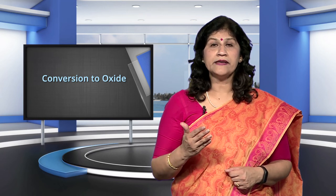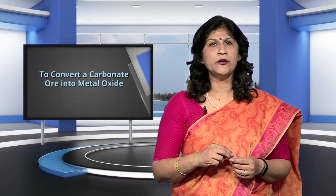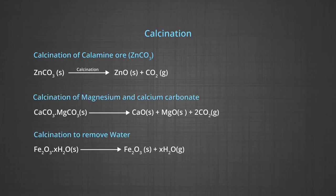Conversion of concentrated ore to oxide can be carried out by either calcination or roasting. Calcination involves the strong heating of concentrated ore in absence of air. On strong heating, the volatile impurities escape leaving behind the metal oxide. For example, when calamine ore (zinc carbonate, ZnCO₃) is heated strongly in the absence of air, it decomposes to form zinc oxide (ZnO) and carbon dioxide (CO₂). Calcination is also used to remove water from hydrated ores and to remove volatile impurities.